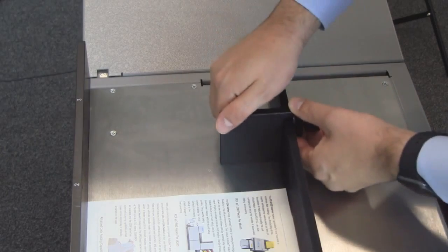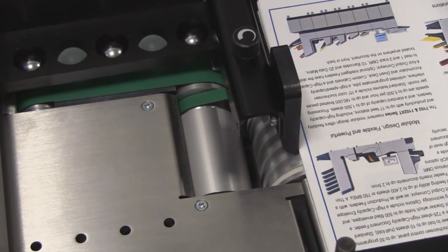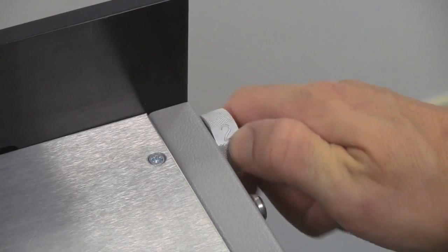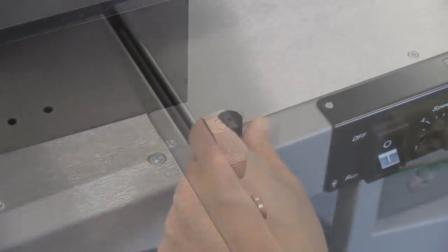Step 3: Slide the rear guide into position so that it's snug against the back of the paper stack. Step 4: Adjust the side air so that the paper elevates and reduces friction. Three settings can be selected based on the paper length and thickness.